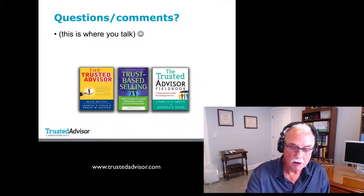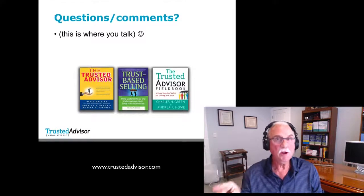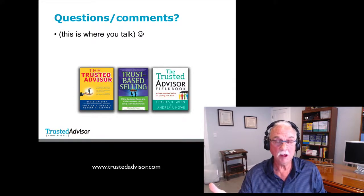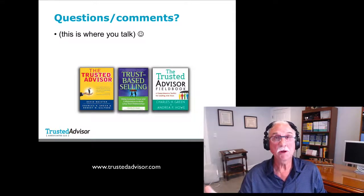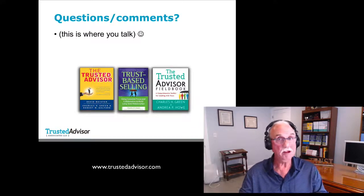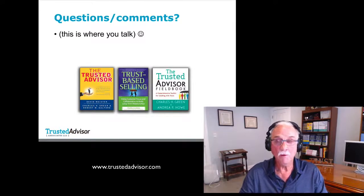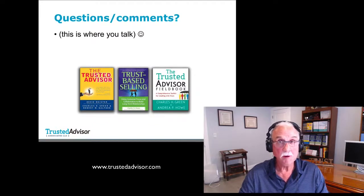Question: do you have a questionnaire to evaluate ourselves in this dimension? Absolutely. I mentioned the TQ — trust quotient — a self-assessment based on the trust equation. About eight years ago we put it online and 70,000 people have taken it, which is where we get the data showing intimacy is the most powerful factor. Go to trustedadvisor.com, click in the upper right corner to take the TQ. There's a free version, or for $30 you get 20 pages of detailed output and analysis.